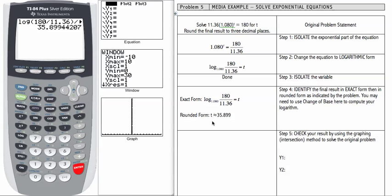I am going to write that as t is approximately 35.899. Remember, we use this approximation symbol when we don't have an exact result. The next thing we need to do is to check this result by graphing using the intersection method in our calculator.